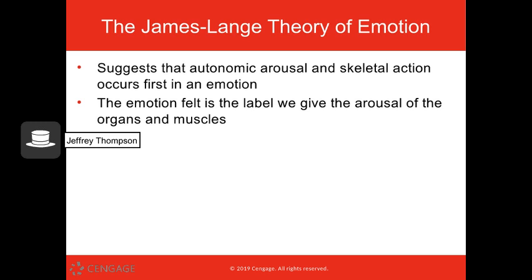There are a few theories of how emotion works in the body. The first is the James-Lange theory, which suggests that your arousal in your body and the skeletal action — any physiological responses — precede any emotional responses. Basically, your emotions are your brain's labeling of whatever things are happening. So my heart's beating real fast, my palms are sweaty, my knees are weak, my arms are heavy — I might label that as being anxious, maybe there's a rap battle coming up.